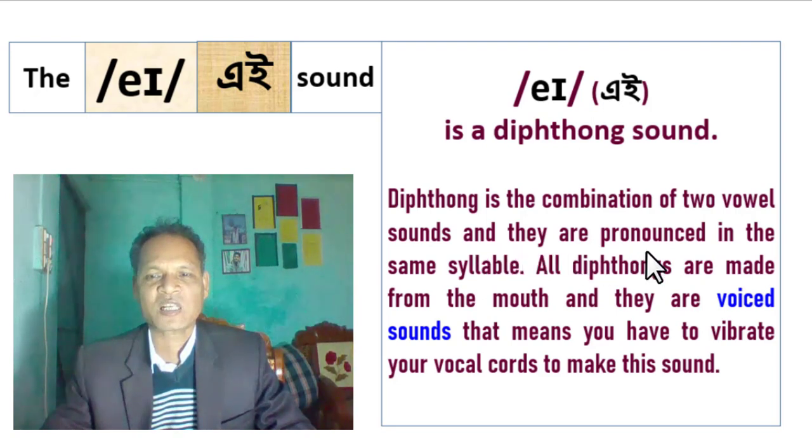Diphthongs are pronounced in the same syllable. All diphthongs are made from the mouth and they are voiced sounds. That means you have to vibrate your vocal cords to make this sound.